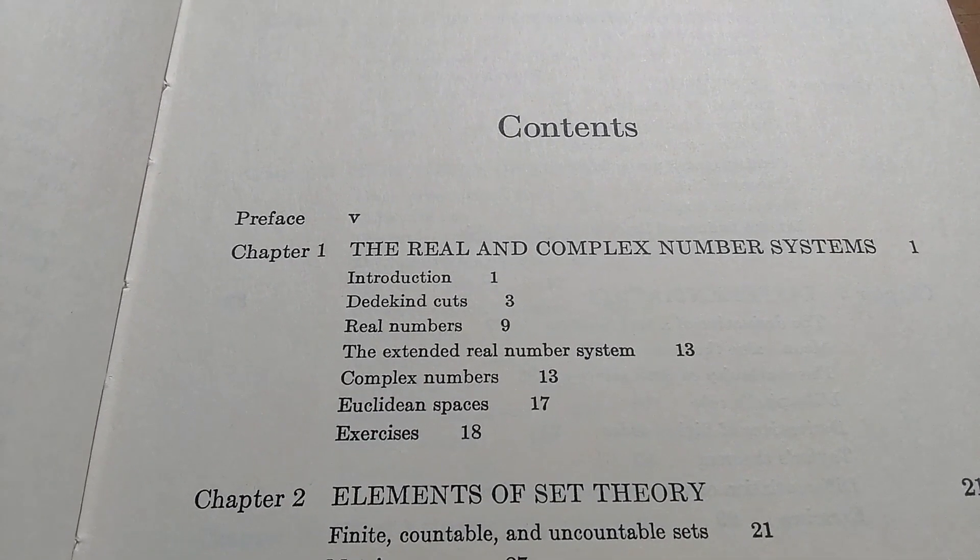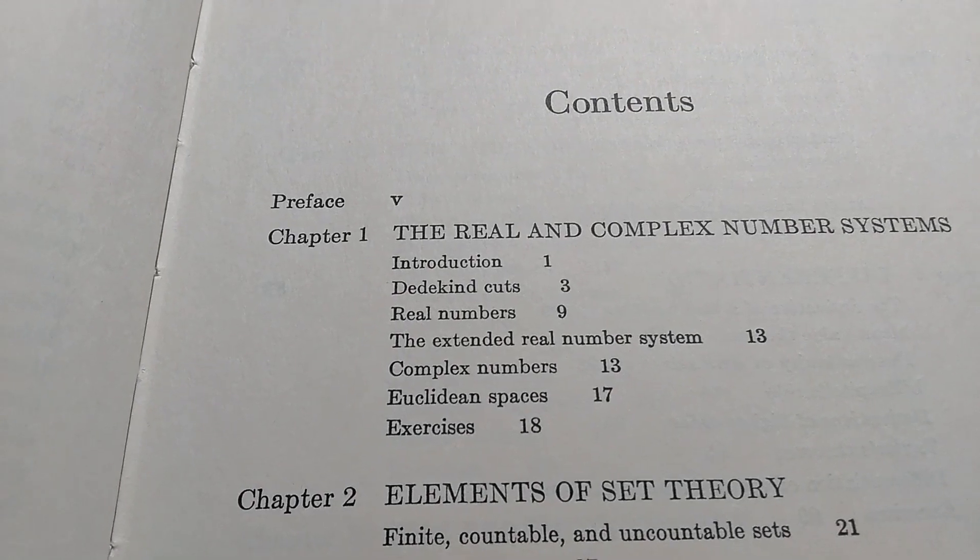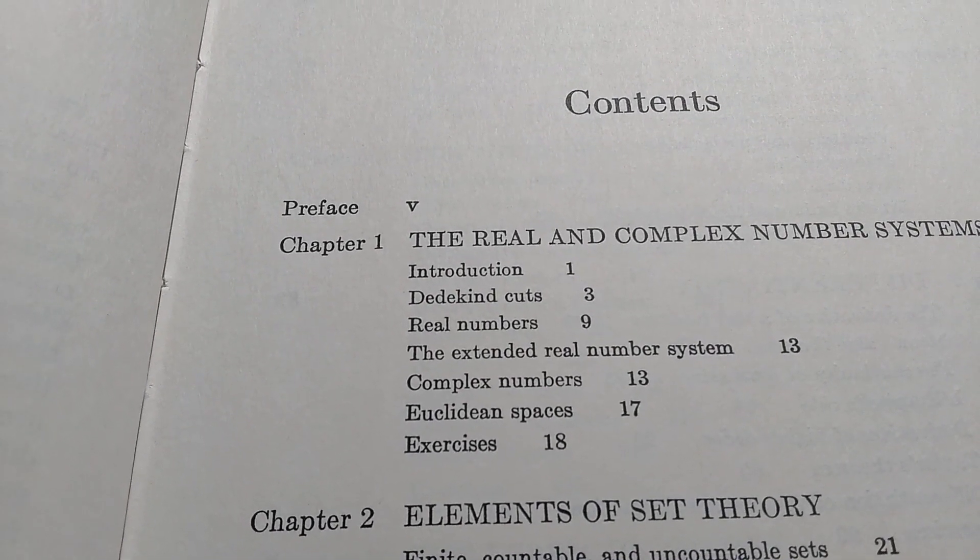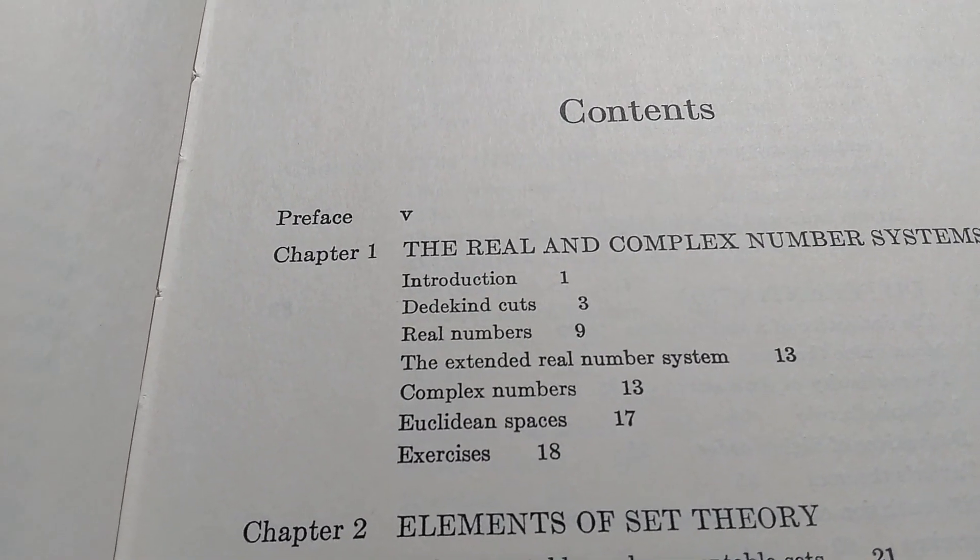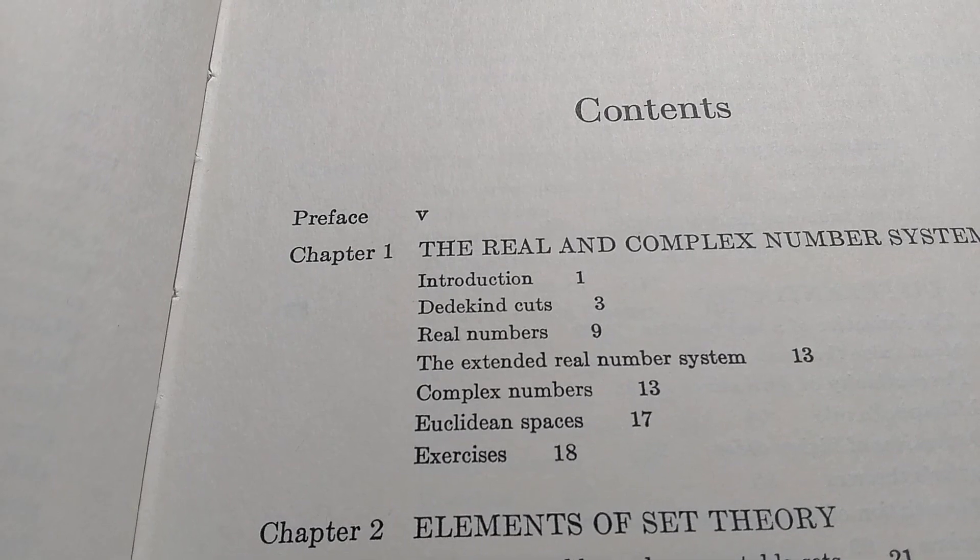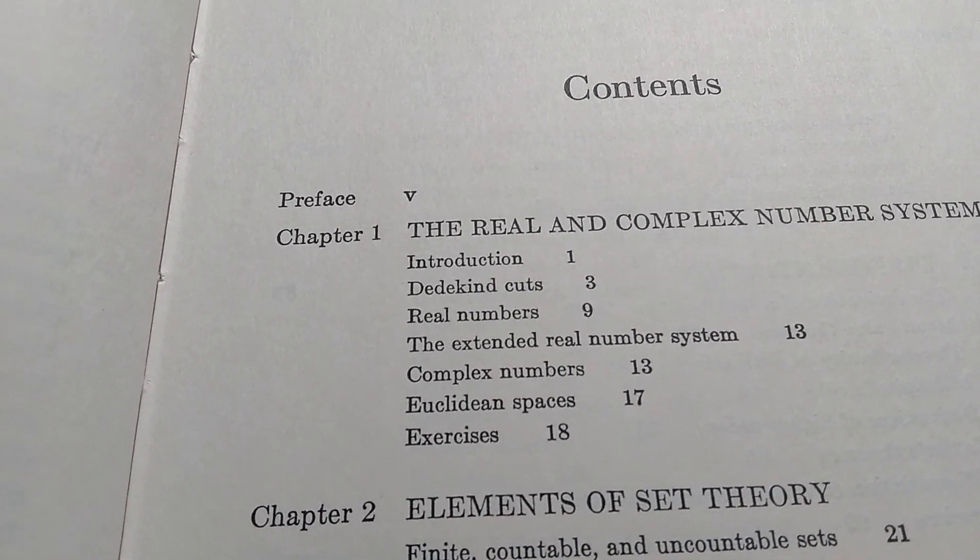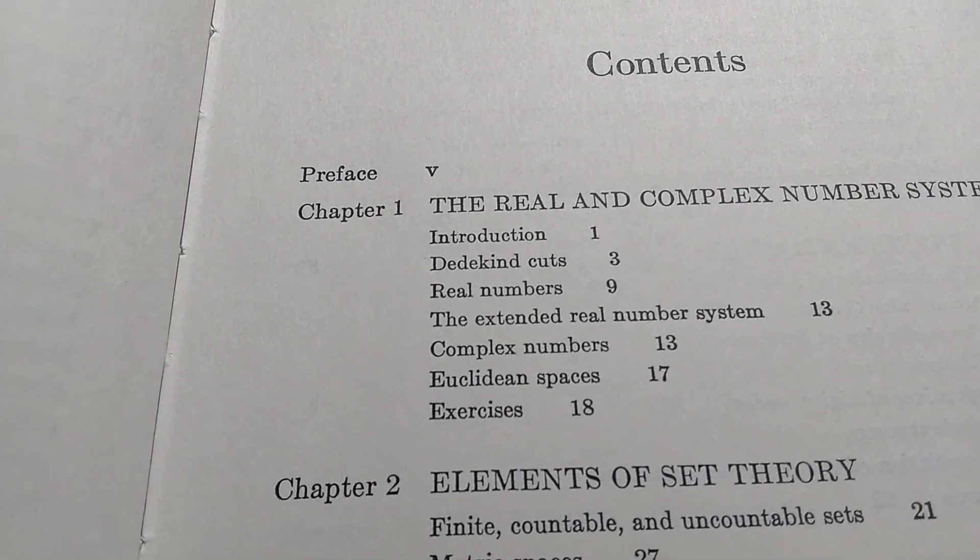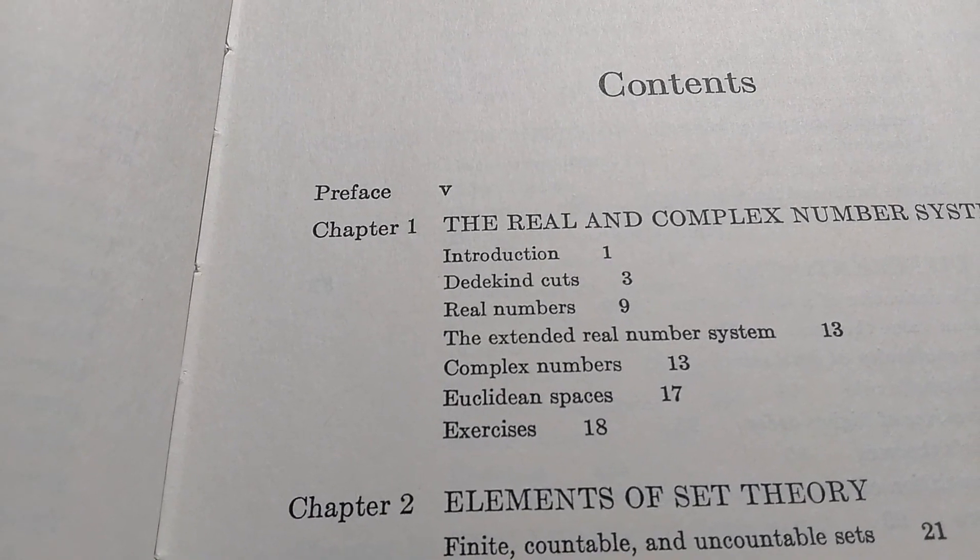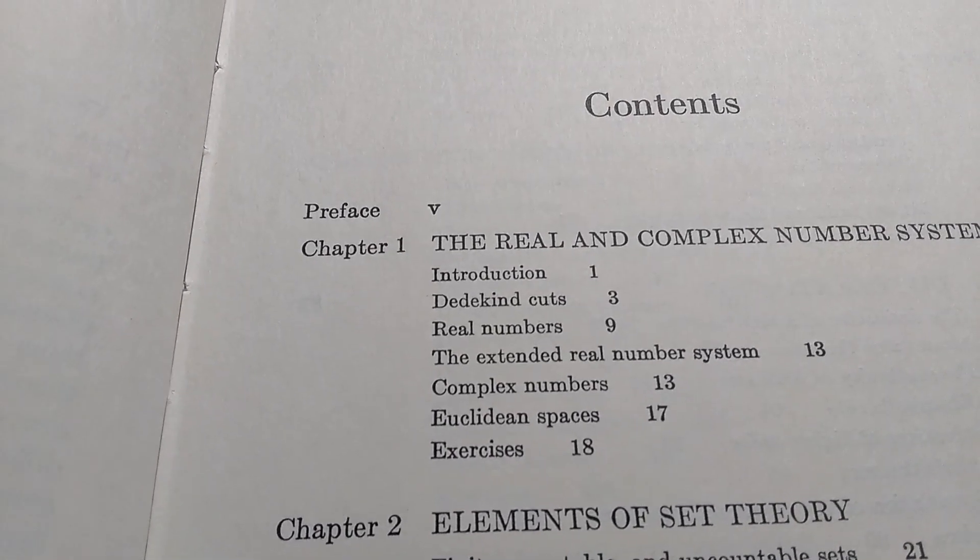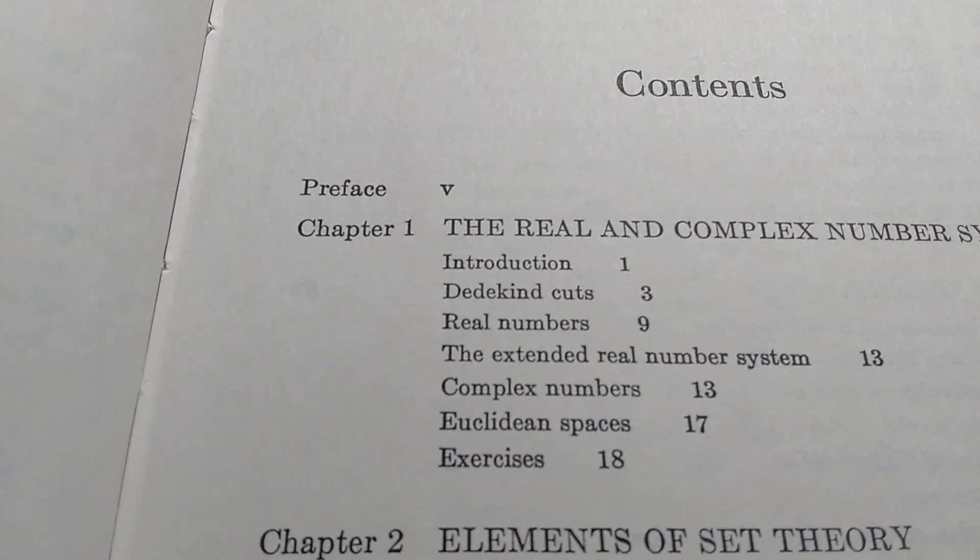So one difference between this version and the newer versions is that this book talks about Dedekind cuts. I believe it's Dedekind or Dedekind. I think the newer versions don't talk about this at the beginning of the book. It might be like at the end somewhere, if it's even in the book. So Richard Dedekind was a famous logician and I'm pretty sure he went insane. So that maybe tells you something about how hard this stuff is.